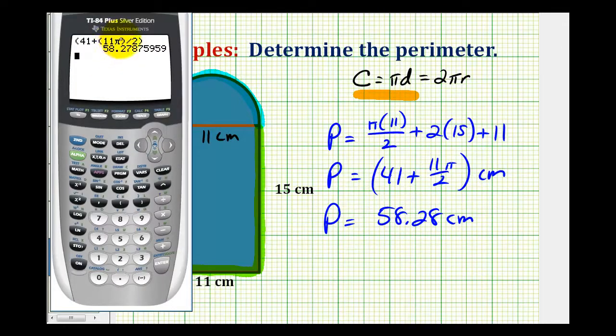Now I do want to mention, if we round pi before we calculate this, it is going to result in more of an error. And I'll go ahead and just show that. So if we use 3.14 for pi, we'd have 11 times 3.14, all divided by two. So notice how the answer is a little bit less.